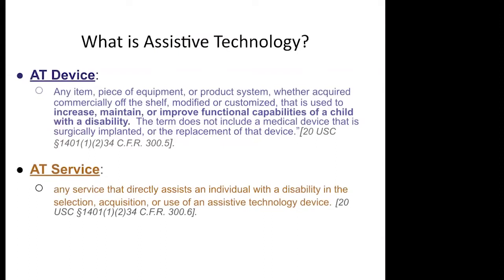What is assistive technology? We hear many different things, so if you'd like to type in the chat what you think assistive technology is. Specifically, an AT device is defined in the code as any item, piece of equipment, or product system — whether acquired commercially off the shelf, modified, or customized — that is used to increase, maintain, or improve functional capabilities of a child with a disability. An AT service is any service that directly assists an individual with a disability in the selection, acquisition, or use of that assistive technology device.